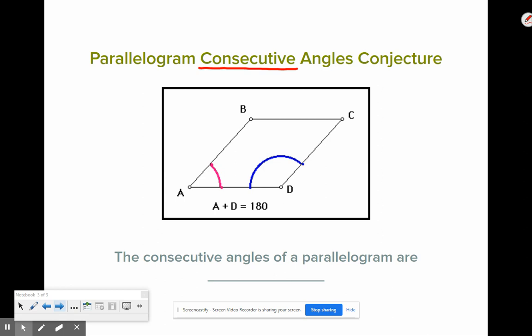So that would be like angle A and angle D in this case. Or angle A and B are consecutive angles. B and C are another pair of consecutive angles. And C and D are also another pair of consecutive angles.